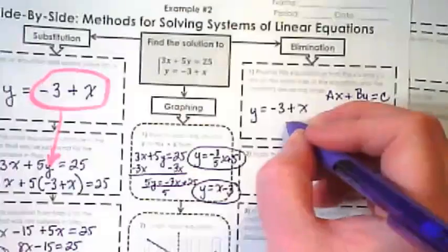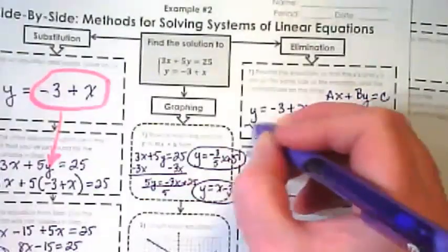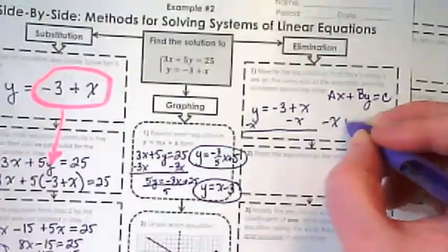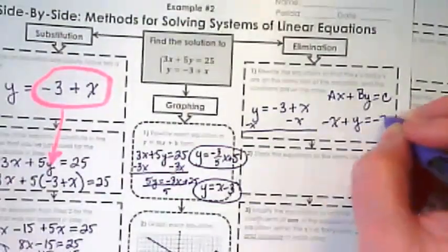We're going to move that x, and we end up with negative x plus y equals negative 3.